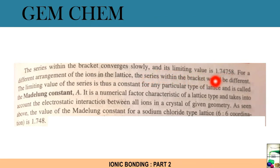This series within the bracket will converge slowly, and its limiting value is 1.74758. For a different arrangement of ions in the lattice, the series within the bracket would be different. We are dealing only with NaCl crystal. You can see different crystals with different Madelung constant.